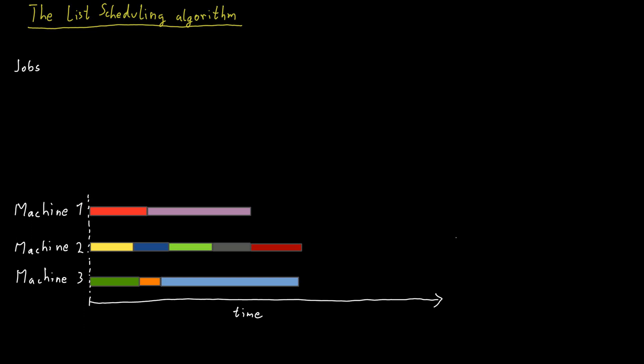We get a solution this way, but how good is that solution? Is the solution optimal? Do we get the lowest possible makespan? Maybe not. We don't really know anything about it so far. In our example, machine number two has the highest load, so that determines the makespan of our solution. But is it possible to get a solution with a lower makespan? And in this particular example, in fact, there is a solution that has a smaller makespan.